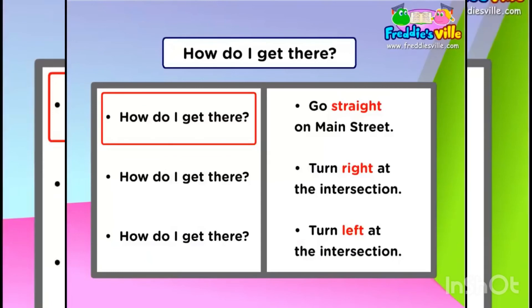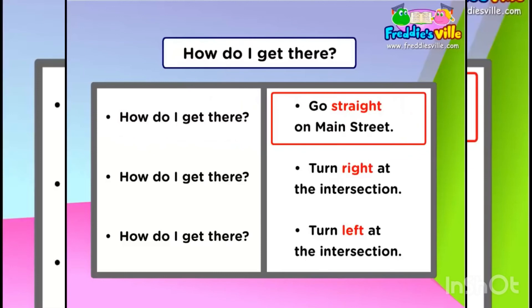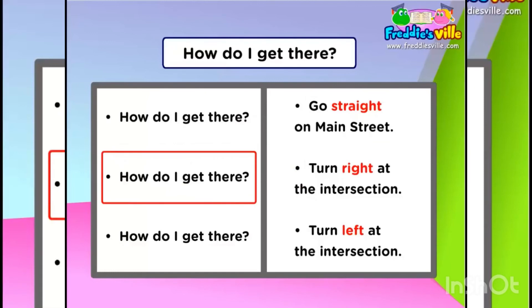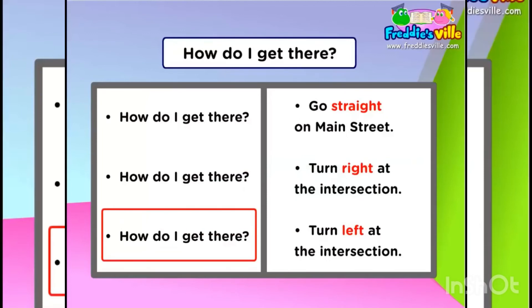Imperatives. Turn left. Go straight. Turn right. How do I get there? Go straight on Main Street. How do I get there? Turn right at the intersection. How do I get there? Turn left at the intersection.